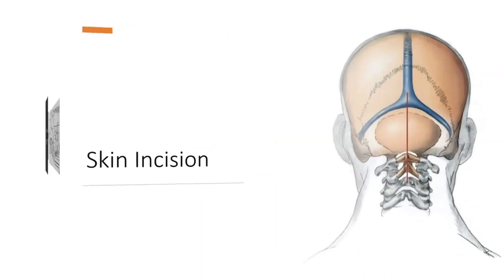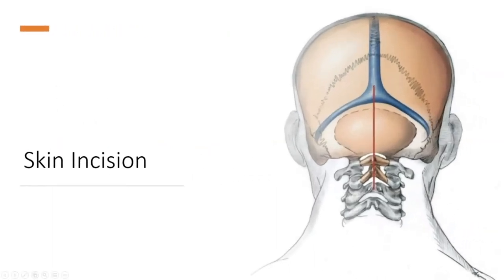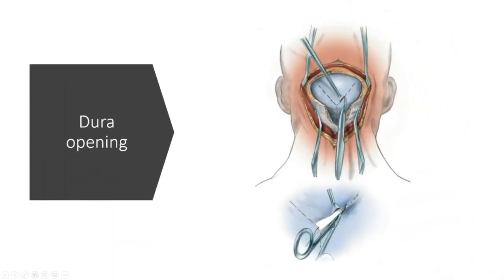The skin incision in the midline goes all the way from the inion down to C2, C3, according to what you have to do. If you have a lesion of the fourth ventricle or for decompression procedures like Chiari malformation, this is the approach. For a pineal, of course, you go a little bit more superior.